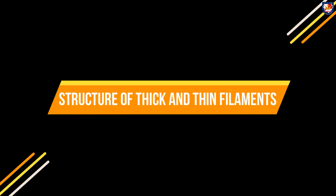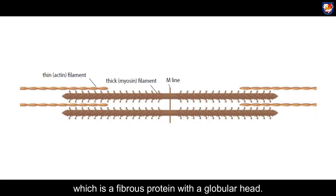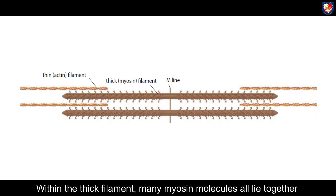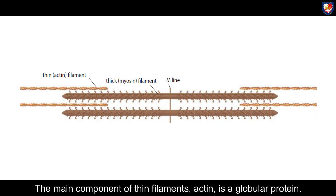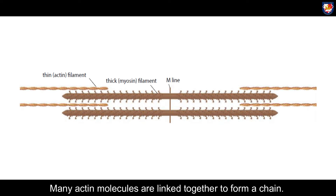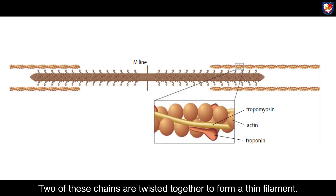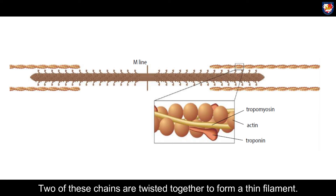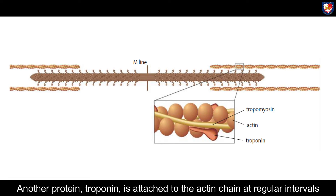Features of thick and thin filaments: thick filaments are composed of many molecules of myosin, which is a fibrous protein with a globular head. Within the thick filament, many myosin molecules lie together in a bundle with their globular heads all pointing away from the M line. The main component of the thin filaments, actin, is a globular protein. Many actin molecules are linked together to form a chain; two of these chains are twisted together to form a thin filament. Also twisted around the actin chains is a fibrous protein called tropomyosin, and another protein, troponin, is attached to the actin chain at regular intervals.